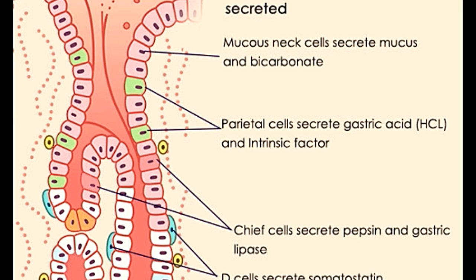The stomach receives parasympathetic nerve fibers from the vagus nerves and sympathetic fibers from the celiac ganglia. Sensory fibers play a role in gastric secretion. There are three phases of gastric secretion: the cephalic phase, the gastric phase, and the intestinal phase. In the cephalic phase, parasympathetic reflexes are triggered due to the smell, sight, taste, or even thoughts about food.